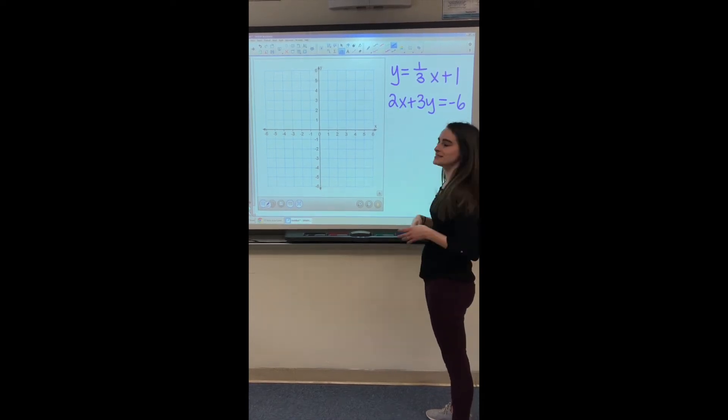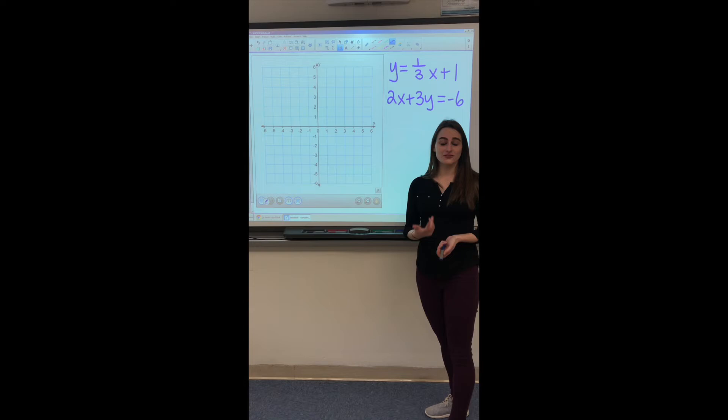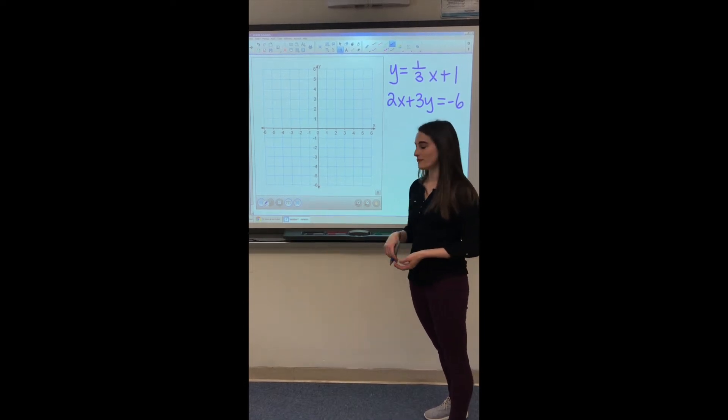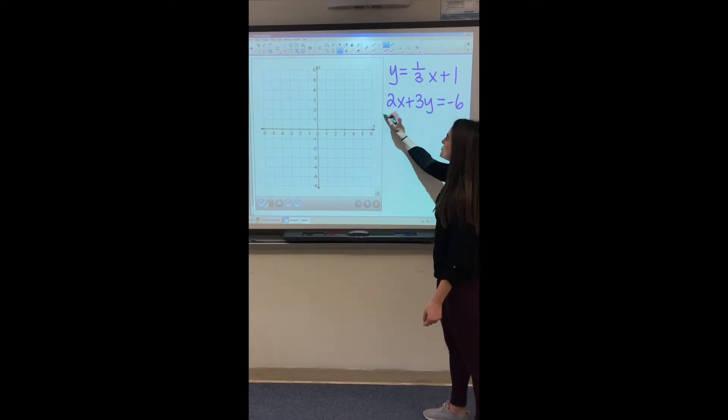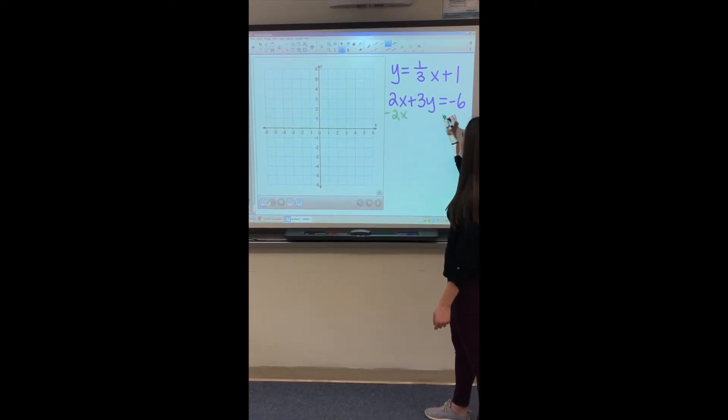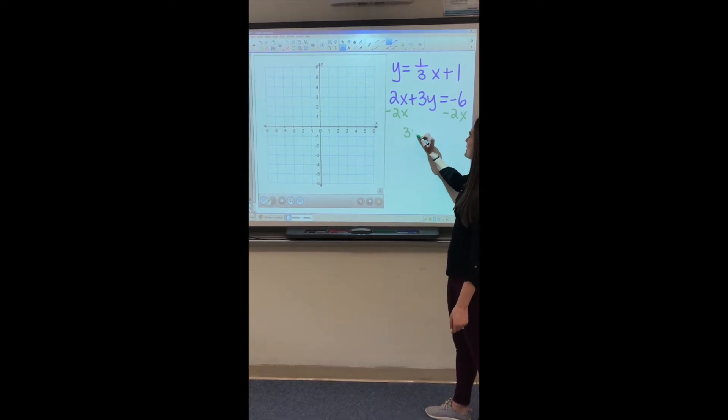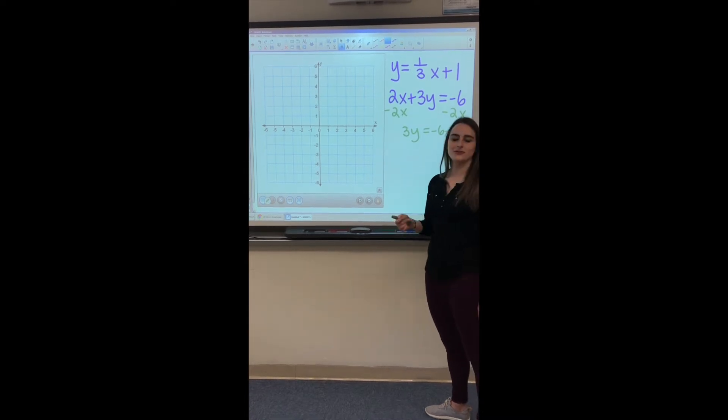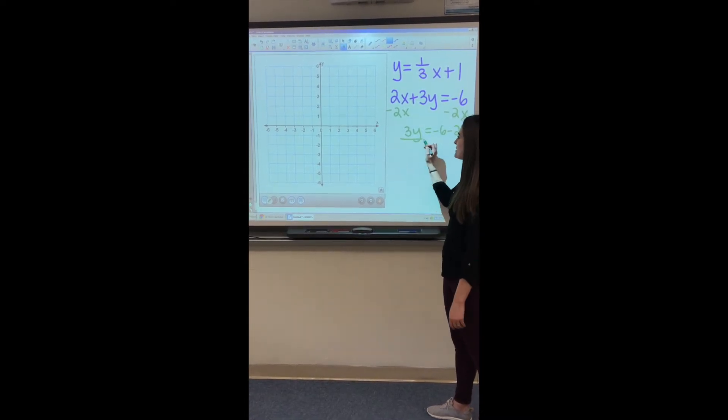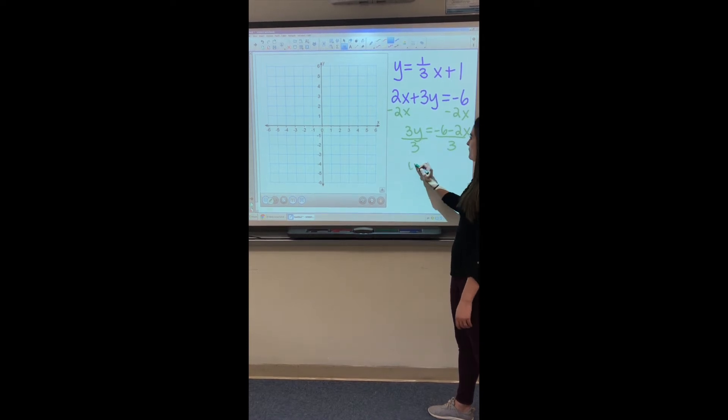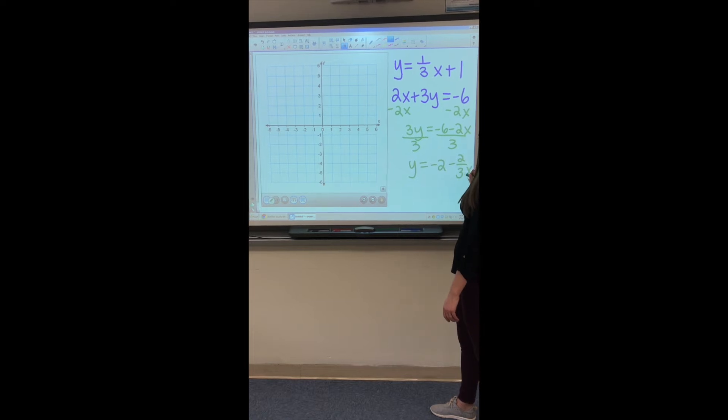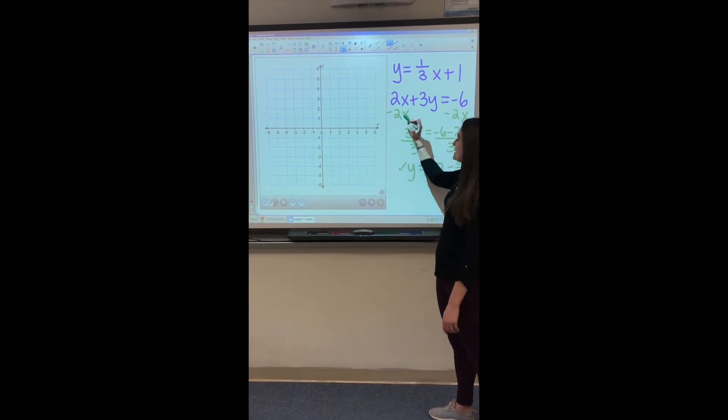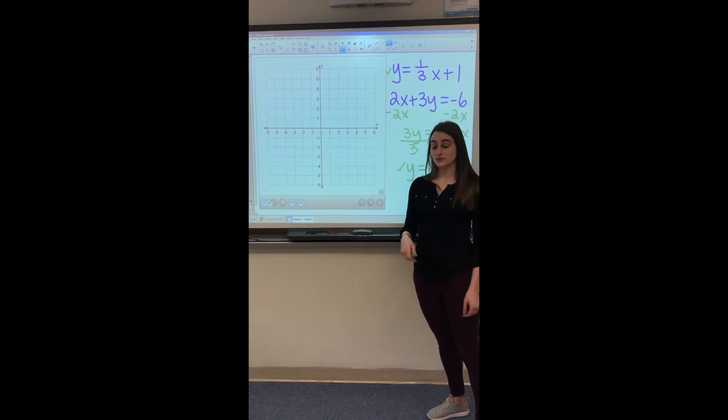So while we could graph this in standard form by the intercepts, it's good practice to know how to rewrite it into slope intercept form. So as we learned already, to rewrite this into slope intercept form, we're going to subtract by 2x on both sides, and we're going to get 3y equals negative 6 minus 2x. And then, to get it in true slope intercept form, divide everything by 3, and we're going to have y equals negative 2 minus 2 thirds x. So now we have this equation and this equation that we are going to graph and see our solution.